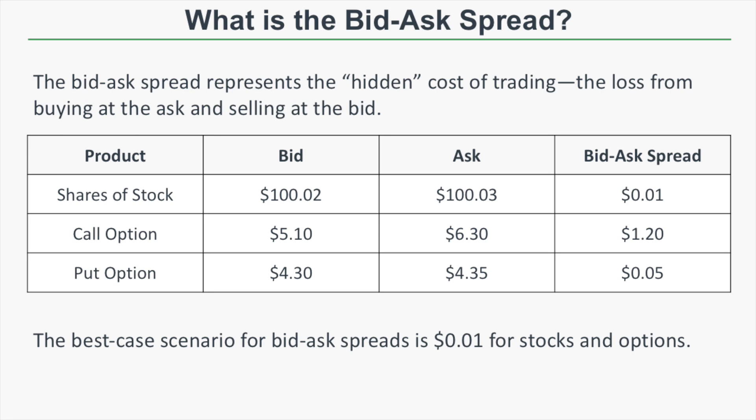You can always try to get filled near the mid price to reduce the cost of entering and exiting a trade, but with wider bid-ask spreads it's going to be harder to get filled near the mid. Trading products with narrow bid-ask spreads makes it very easy to enter and exit positions without incurring massive costs.